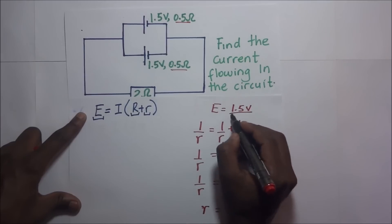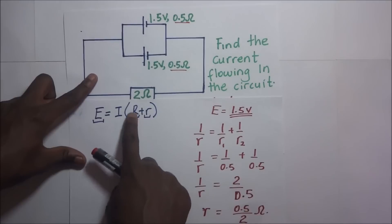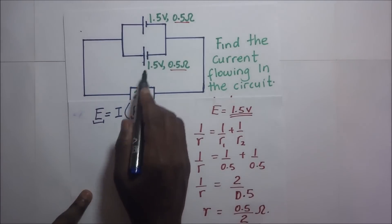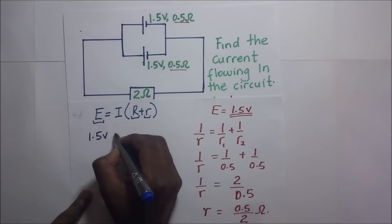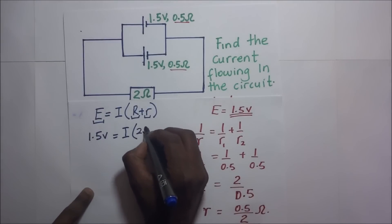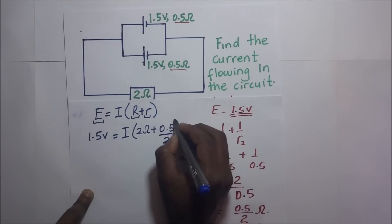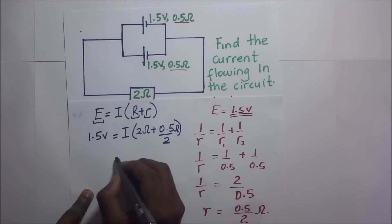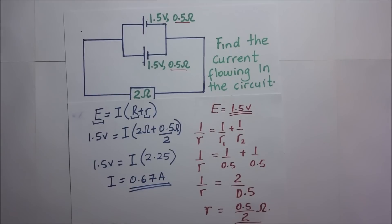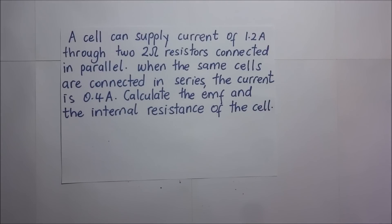So we have our effective EMF and effective internal resistance. The effective resistance in the external circuit is 2 ohms. Substituting, our EMF of 1.5 volts equals I times capital R of 2 ohms plus the effective internal resistance of 0.5 over 2 ohms. Solving for I, the current flowing through the circuit is 0.67 amperes. Try working that out for yourselves and let me know what answer you get.